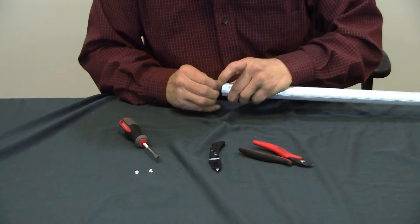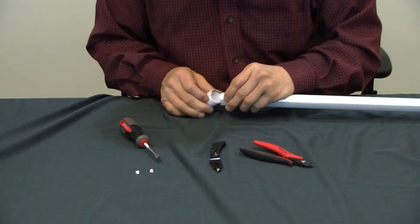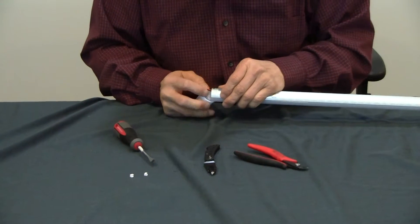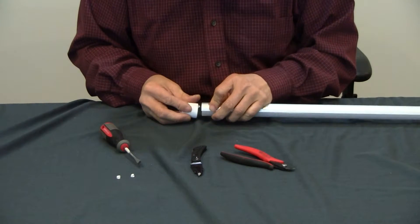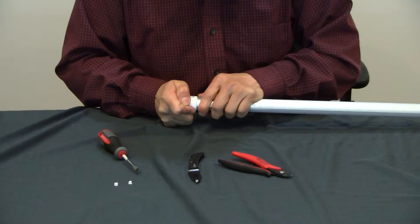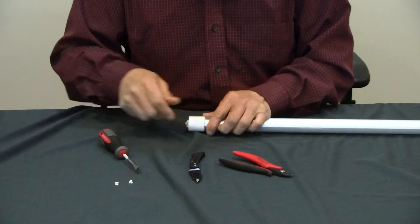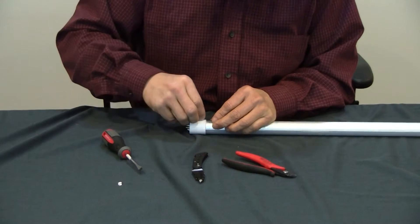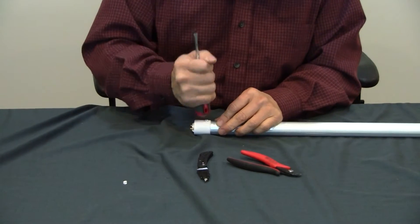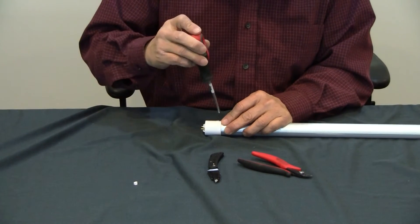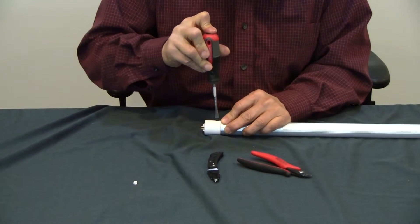Remember to align the hole. You align it so that you can put the tab back into the holes. Now it's aligned. Put the tab back, press it. Now rotate the groove of the tab. Now it's in lock position.